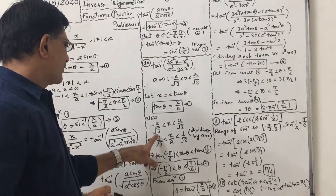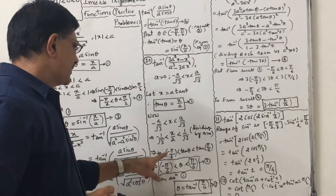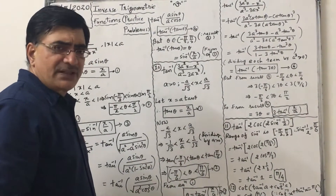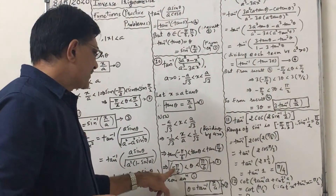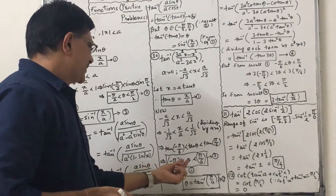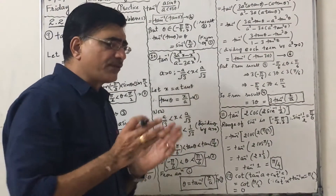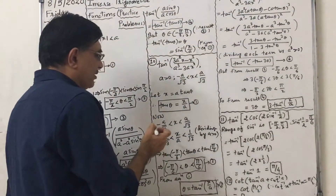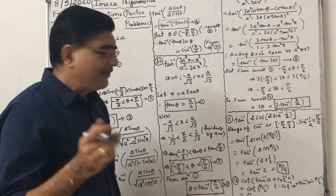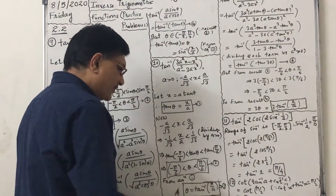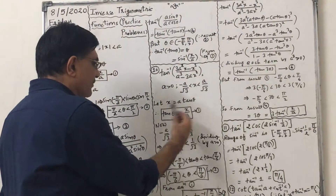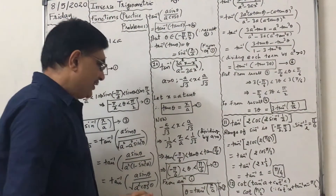Minus 1/√3 equals tan(−π/6). This is tan θ and this is tan(π/6). Since tan is also an increasing function, we get: minus π/6 less than θ less than π/6. Thus θ is in the range of tan⁻¹ — the open interval minus π/2 to π/2. It is a subset of it. So I can write θ = tan⁻¹(x/a). Now let us start the simplification.